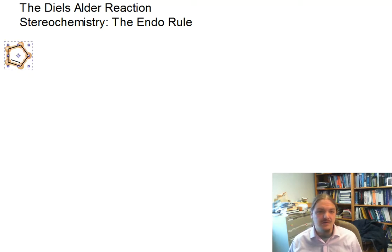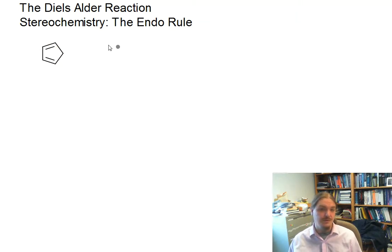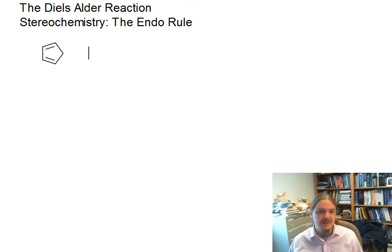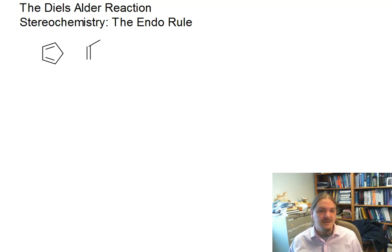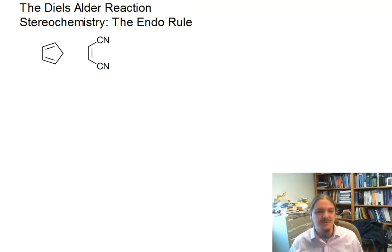Hello. In this video, I'm going to talk about the stereochemistry of the Diels-Alder reaction, specifically something called the endo rule. If you watched the previous video about the transition state of the Diels-Alder reaction, that video ended with just the faintest hint of what the endo rule is, and I'm going to represent it to you here.